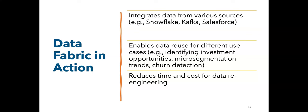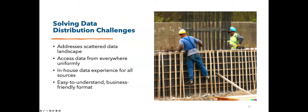Data fabric in action integrates data from various sources like Snowflake, Kafka, and Salesforce. It enables data reuse for various different use cases and reduces time and cost for data re-engineering. Fabrics enable the integration and analysis of data from diverse sources, allowing for data reuse, improved decision-making, and reduced costs associated with data re-engineering. Solving data distribution challenges addresses the scattered data landscape across various internal and external systems, enabling organizations to access all their data from any location as if it were stored in one place — presented in a clear, business-friendly format.